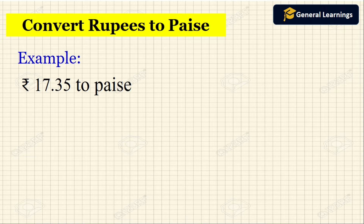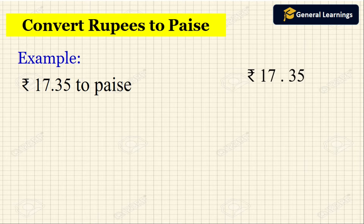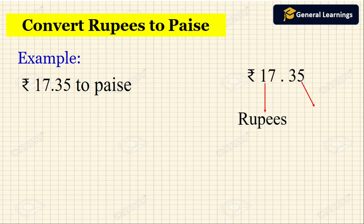Now we will see another example. Here they have asked us to convert rupees 17.35 to paise. In 17.35, the left side of the dot is called rupees, the right side of the dot is called paise, and both are separated by a dot.